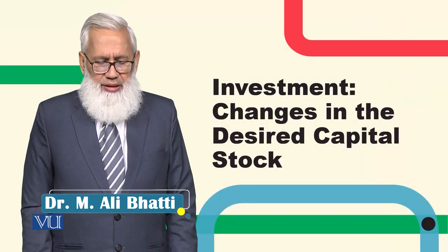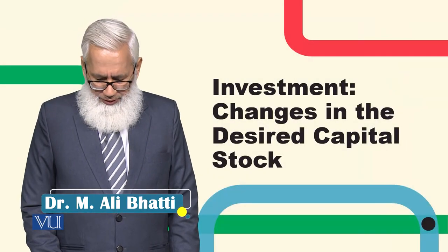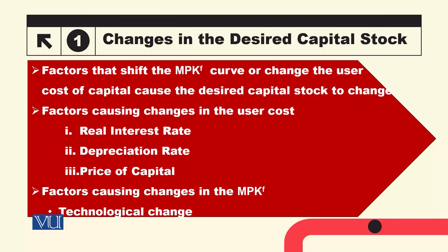Changes in the desired capital stock. Dear students, I am going to discuss how desired capital stock is determined by the user cost and by the value of the marginal product of capital. So if there is any change in the marginal product of capital or in the user cost, this will change the desired level of capital stock.